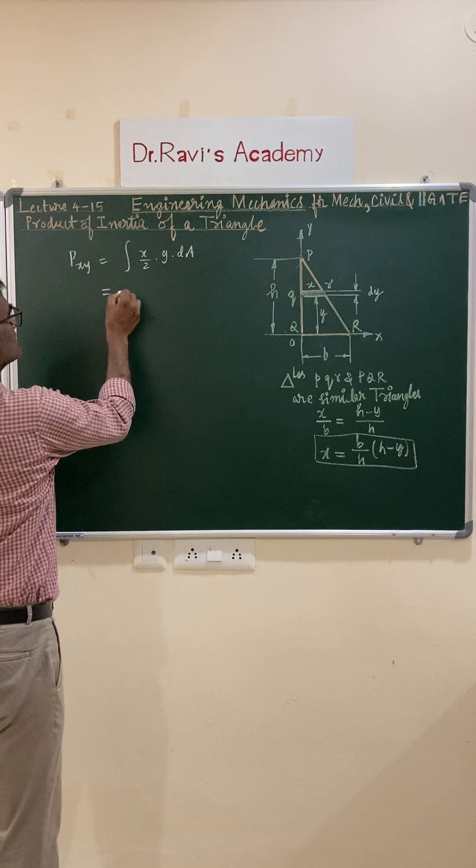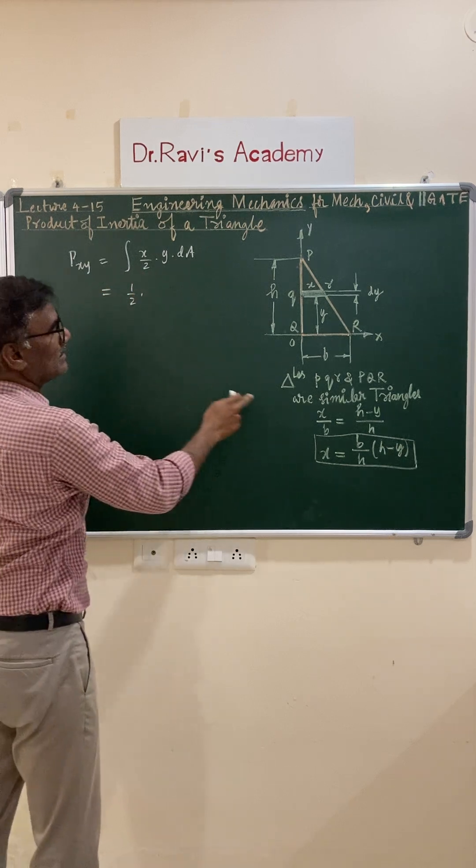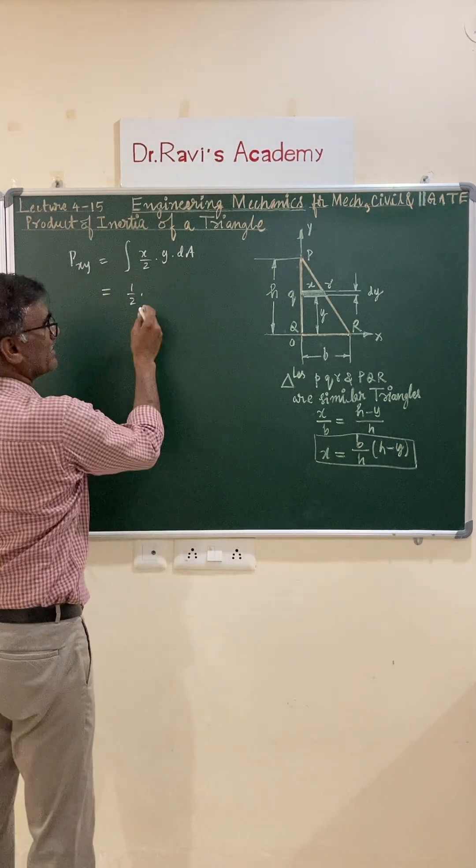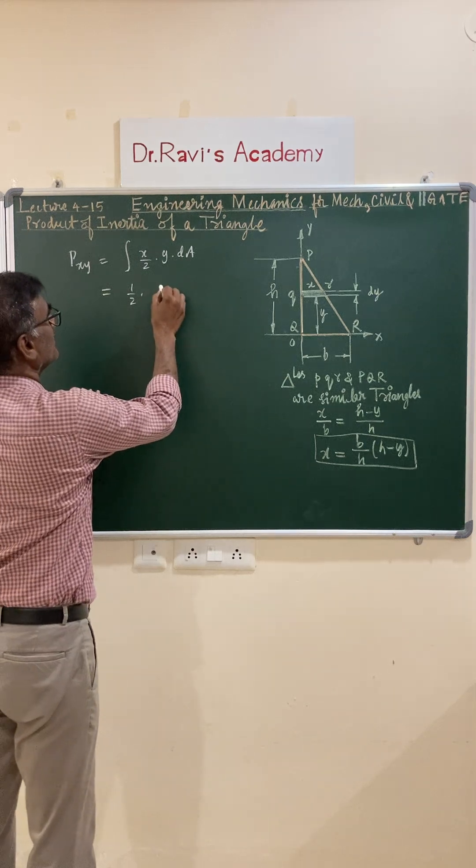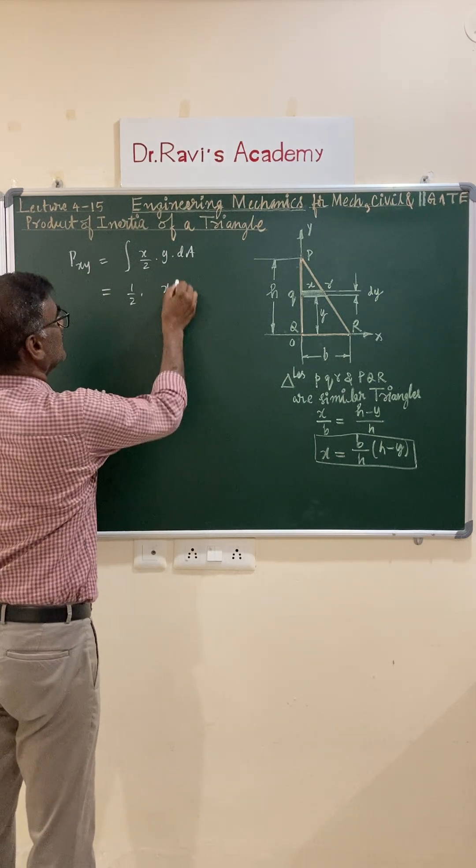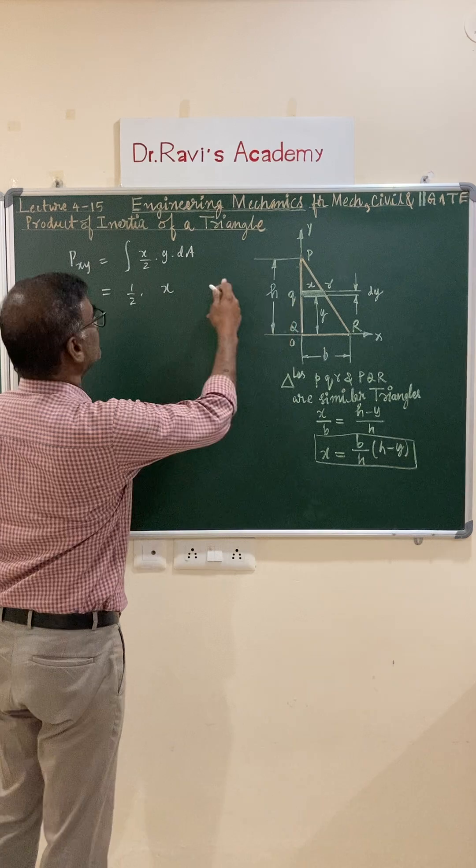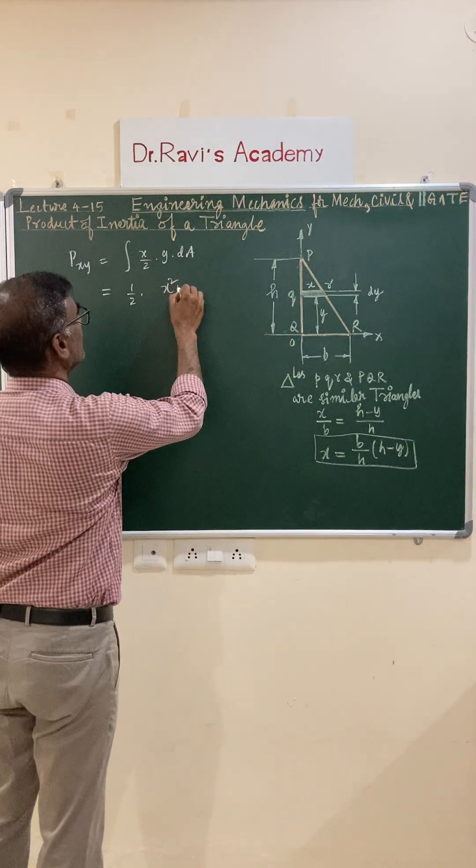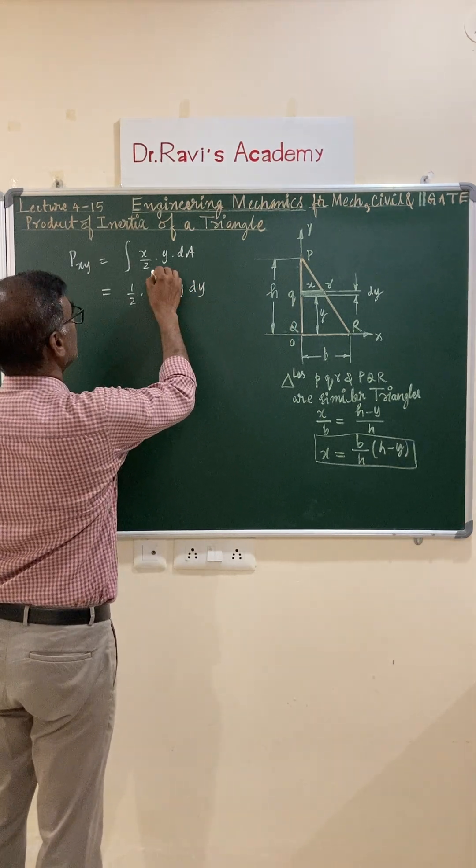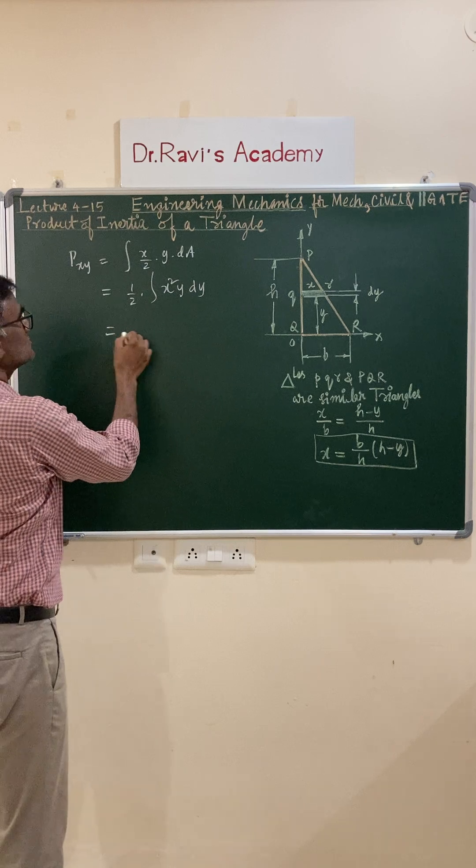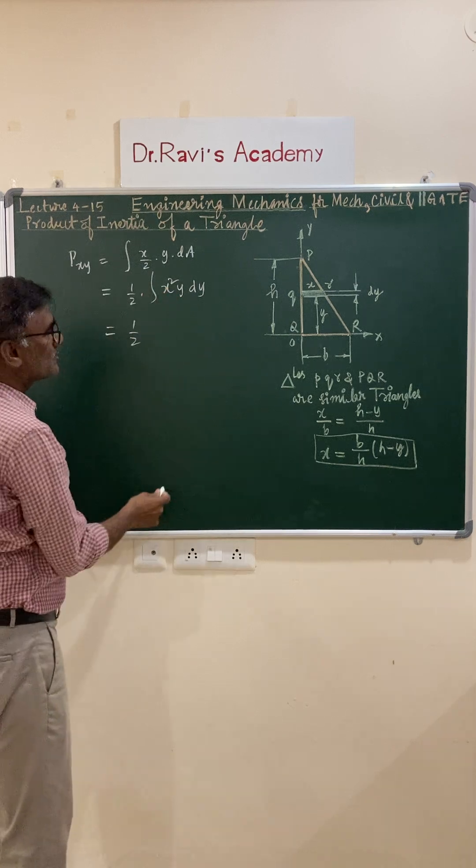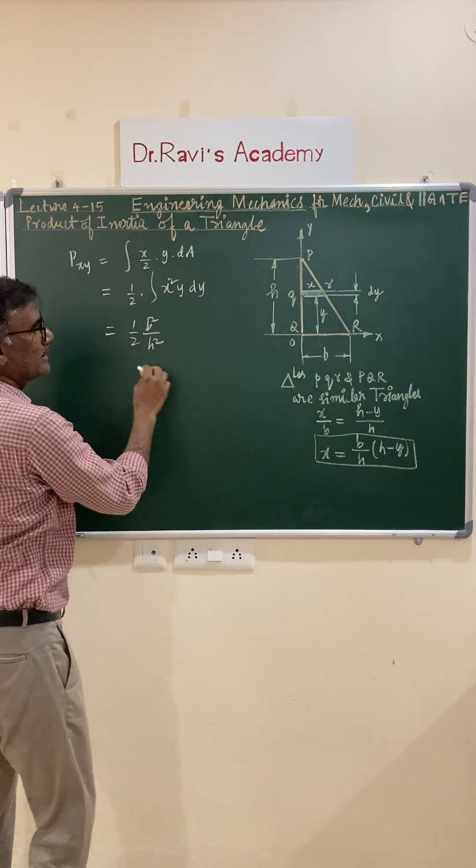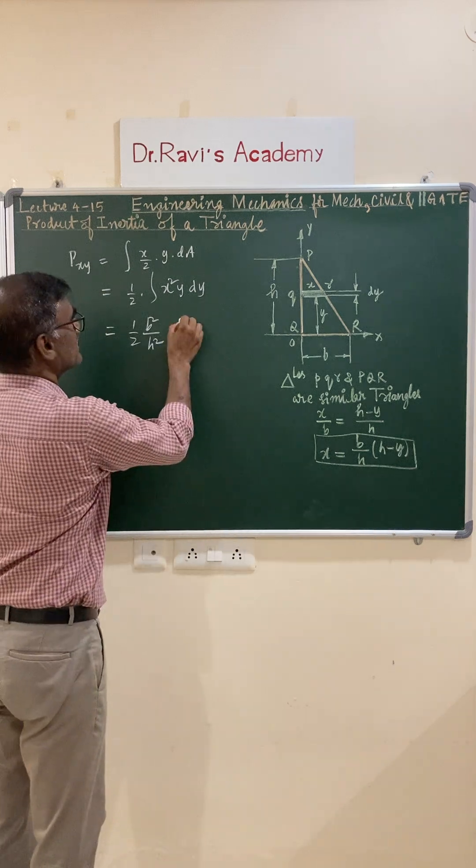It is 1 by 2, and substitute your x value into this. You have x da is x dy, that becomes x squared y into da which is dy. Substitute x value into this: b squared by h squared into h minus y whole squared, that becomes h squared plus y squared minus 2hy into y dy.